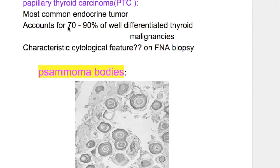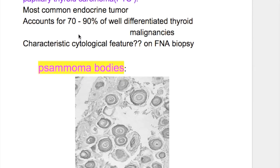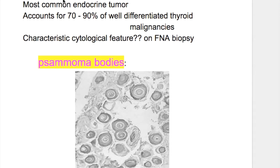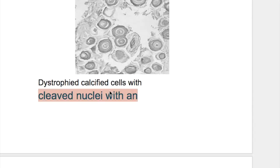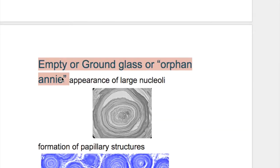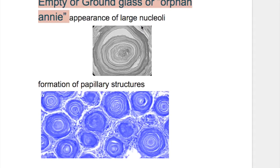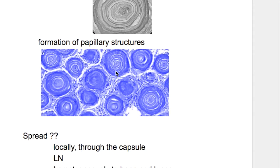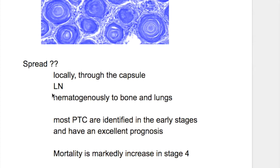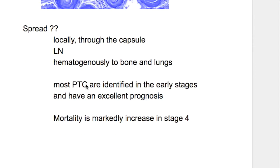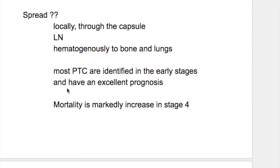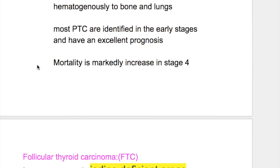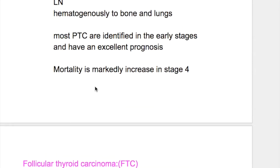Papillary thyroid carcinoma is the most common endocrine tumor, occurring in 80 to 90% of cases. Characteristic cytological features on FNA biopsy include psammoma bodies — dystrophic calcified cells — with cleaved nuclei showing empty, ground-glass, or orphan Annie appearance. There is formation of papillary structures. It spreads locally, through lymph nodes, and hematogenously. Most cases are identified early with excellent prognosis. Mortality is markedly increased in stage 4.